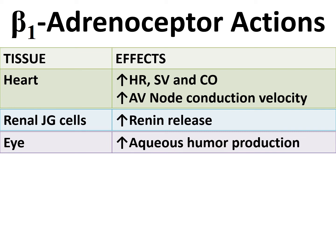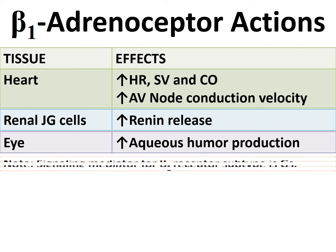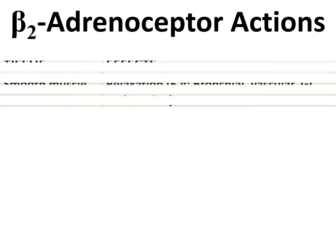In the eye, beta-1 receptor stimulation increases aqueous humor production, which maintains intraocular pressure. Elevated intraocular pressure can lead to glaucoma and visual impairment. These are the major areas of beta-1 receptors, and they are coupled to Gs proteins.